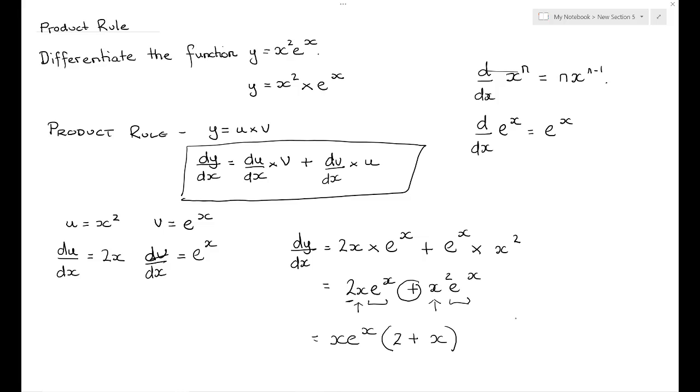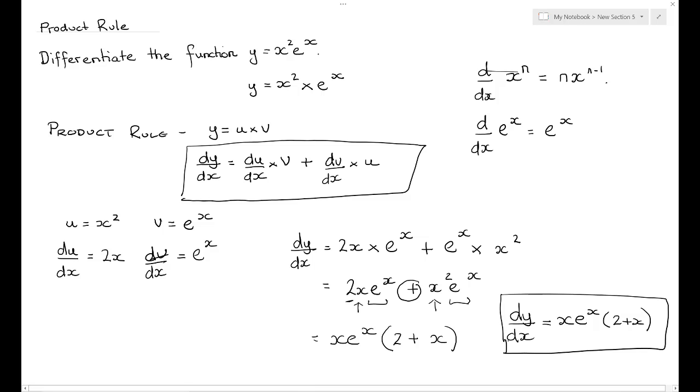So to summarize, if I have the function y equals x squared e to the x, using the product rule I find dy/dx is equal to x e to the x multiplied by 2 plus x, and that there is my final answer.